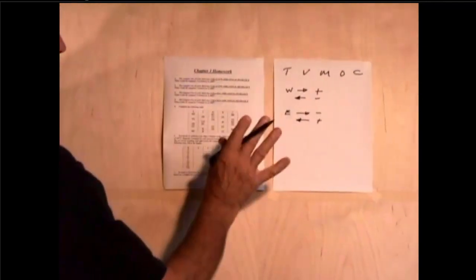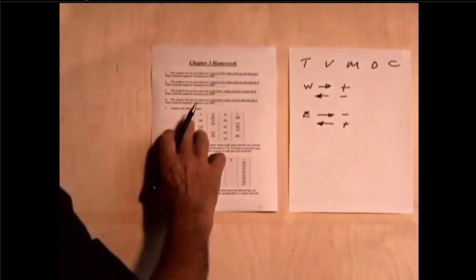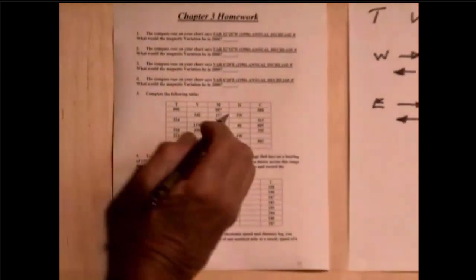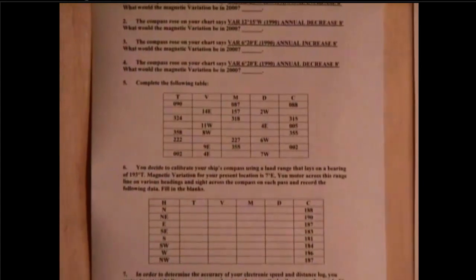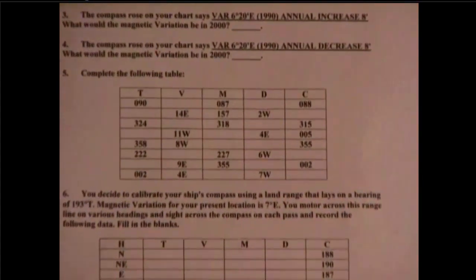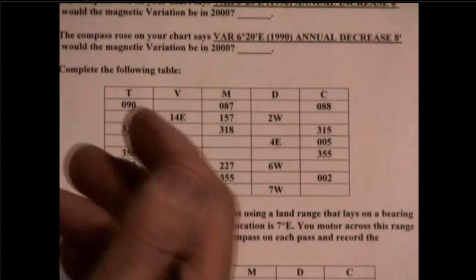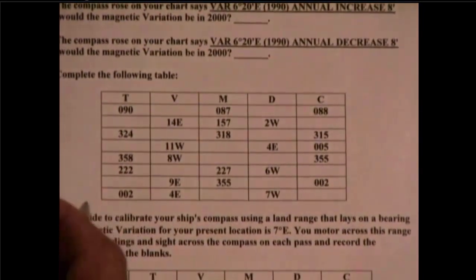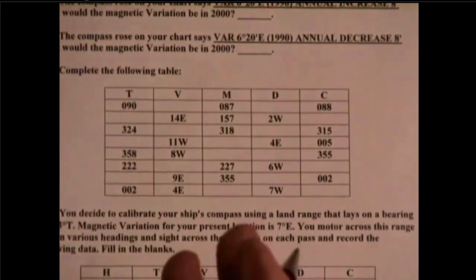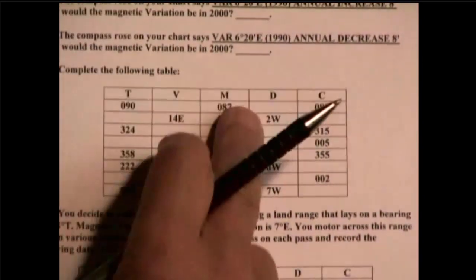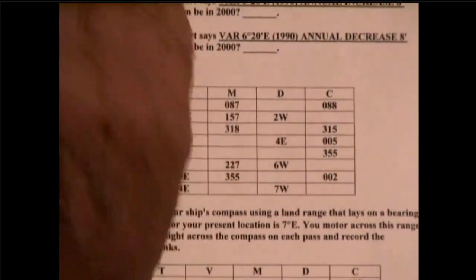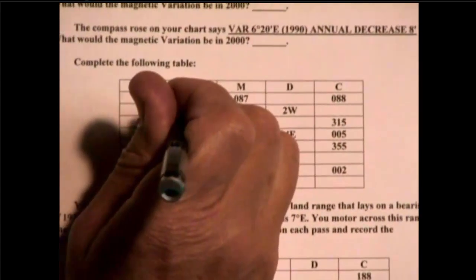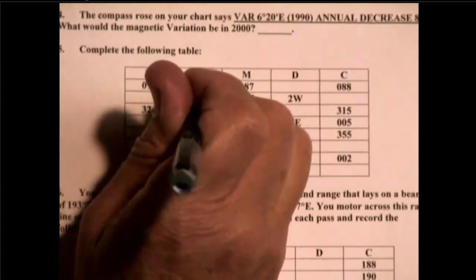So, let's just go through it item by item. Here we have a true of 090, and we have a magnetic of 087. So, what would the variation be? Well, first of all, it's going to be a subtraction of 3. Going from left to right, a subtraction of 3 would be easterly. So, I'm going to write in here 3 east.